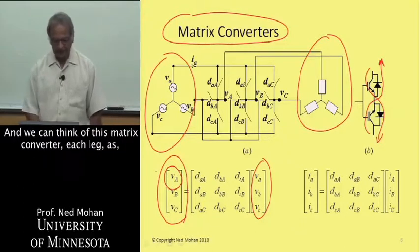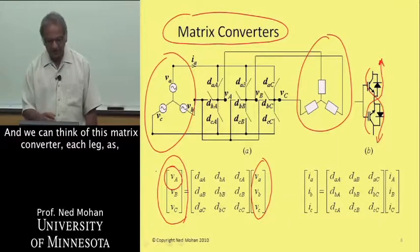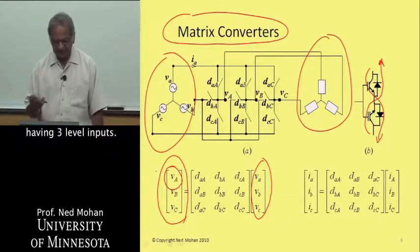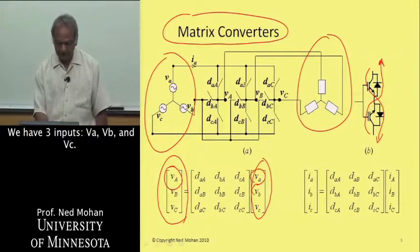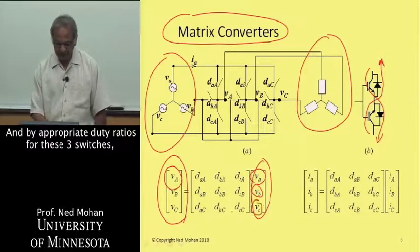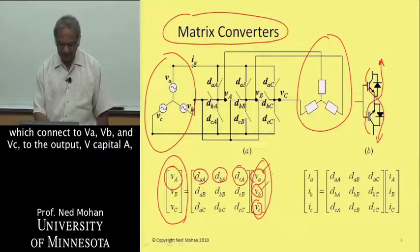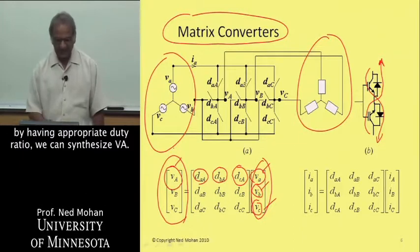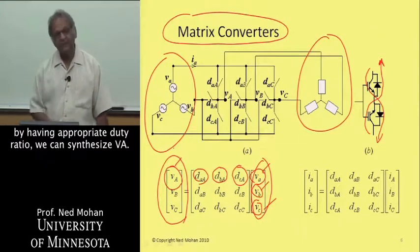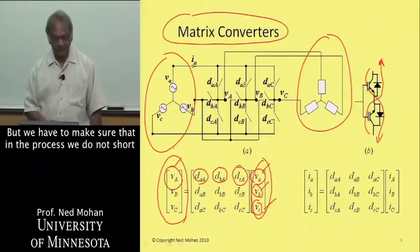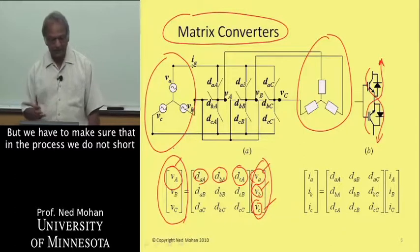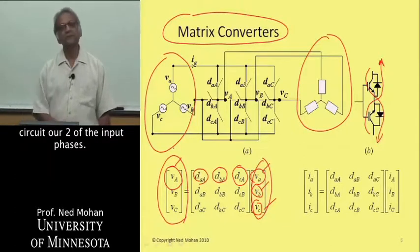Let's just concentrate on one of the output voltages, VA. We can think of this matrix converter on each leg as having three level inputs. You have three inputs, VA, VB, and VC. By appropriate duty ratios for these three switches, which connect VA, VB, and VC to the output V capital A, by having appropriate duty ratio, we can synthesize VA. But we have to make sure that in the process, we do not short circuit two of the input phases.